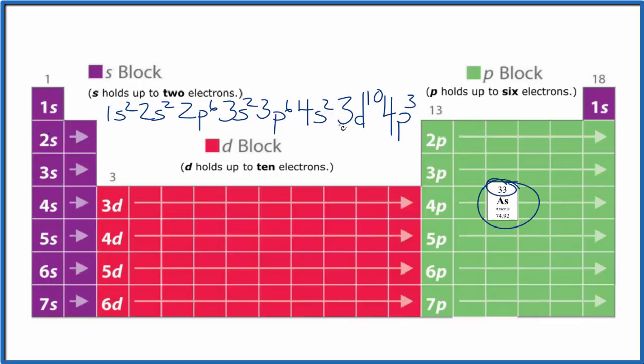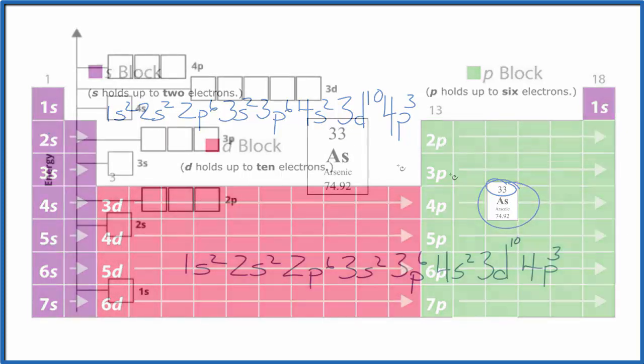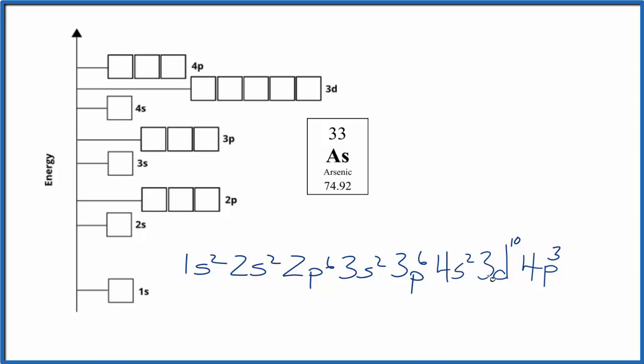We can use the electron configuration now to write the atomic orbital diagram for arsenic. Both of these representations—the electron configuration and the atomic orbital diagram—represent the same thing. We're describing where the electrons are around the nucleus of the arsenic atom.